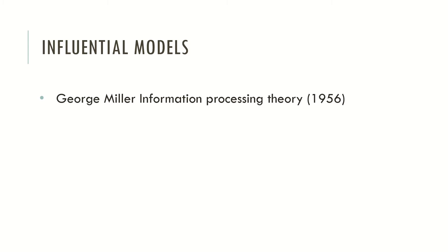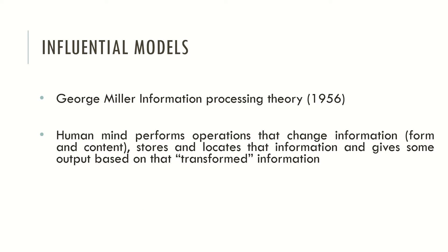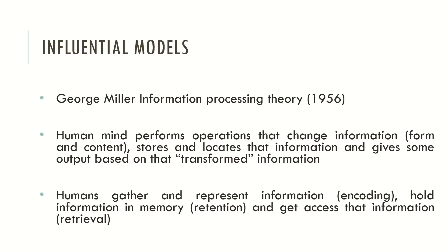Now let's move to some influential models that shaped cognitive psychology. George Miller's information processing theory states that the human mind performs operations that change information's form and content, stores and locates that information, and gives output based on the transformed information. Humans gather and represent information — the encoding process — hold information in memory — the retention process — and get access to that information — the retrieval process.